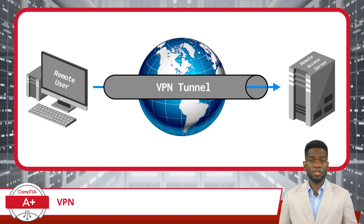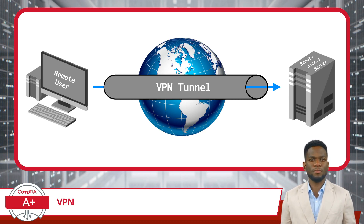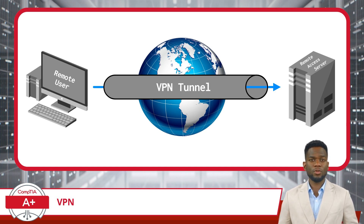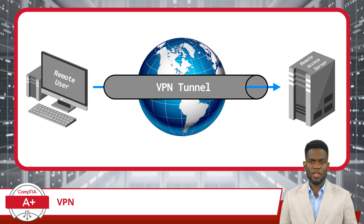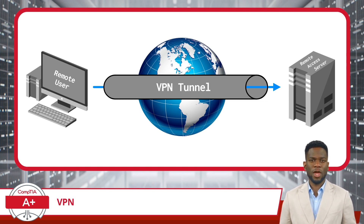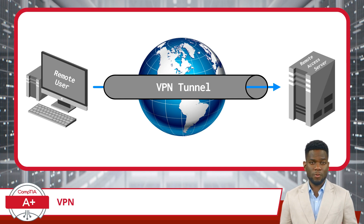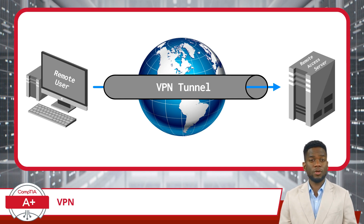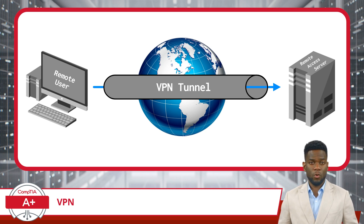This encrypted connection is often referred to as a VPN tunnel, and it enables you to access data across the internet privately and securely. Think of the internet as a bustling highway where information travels openly. A VPN, in this analogy, acts like a private tunnel on this highway that only authorized vehicles, or data packets in this case, can use.